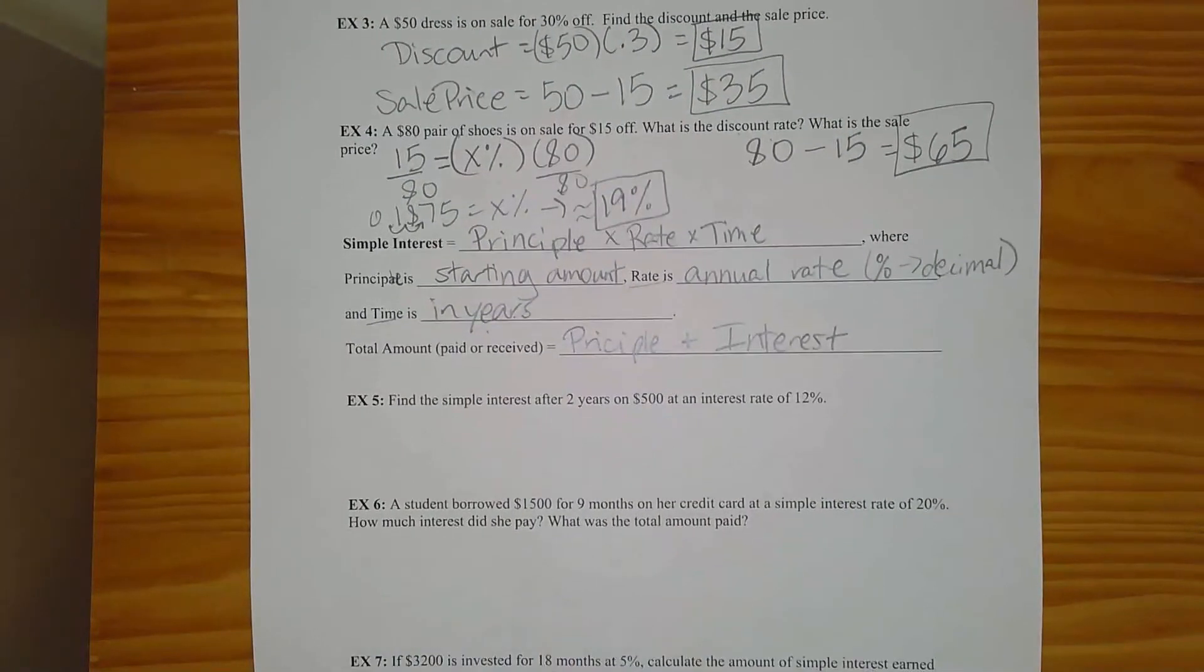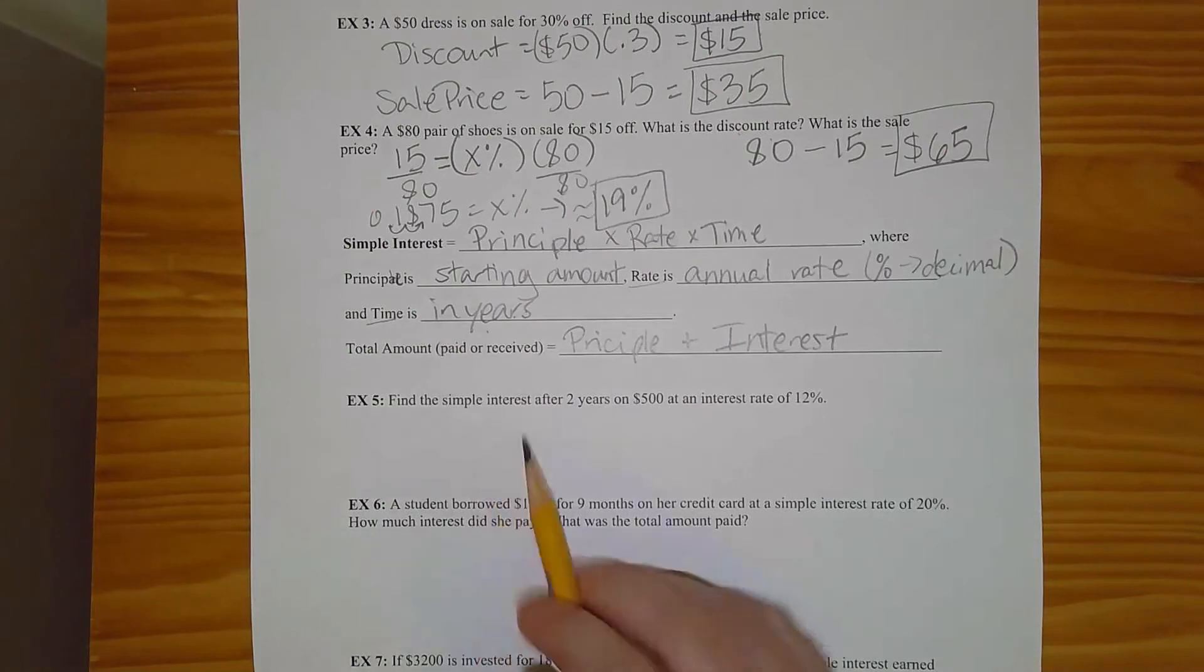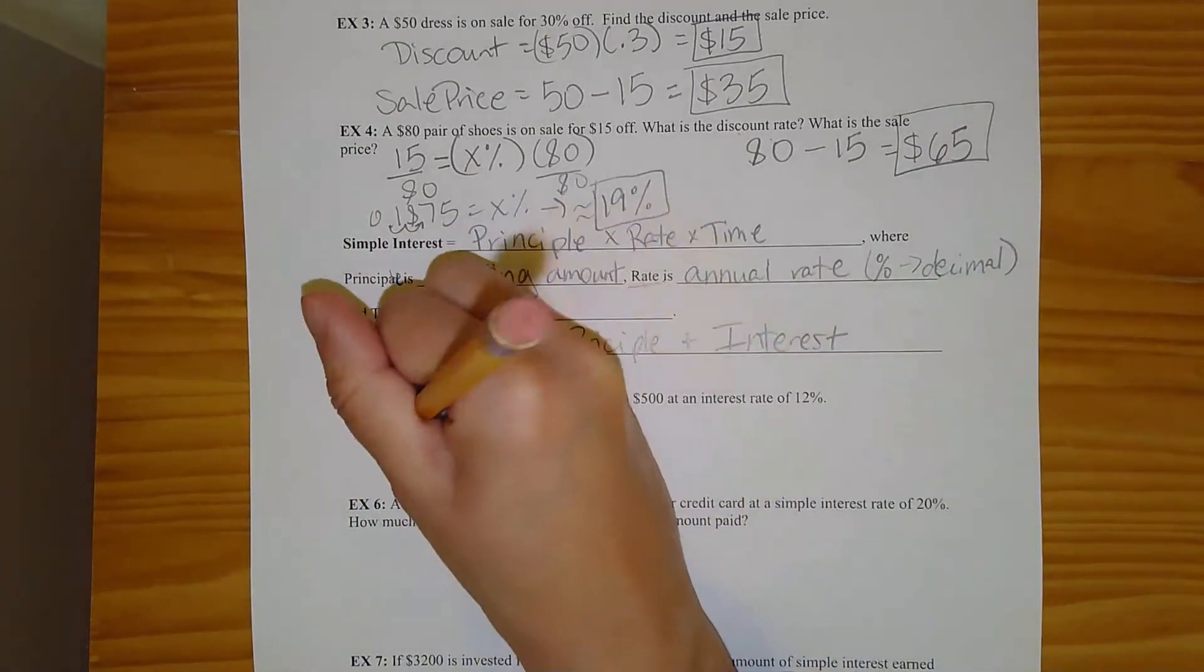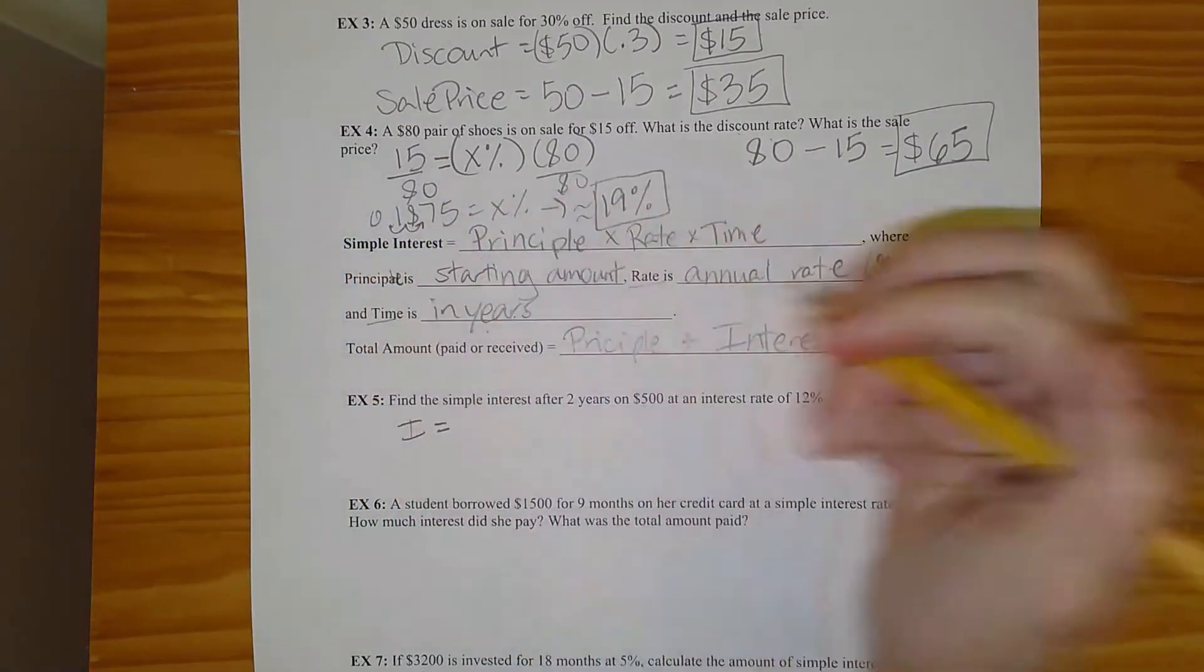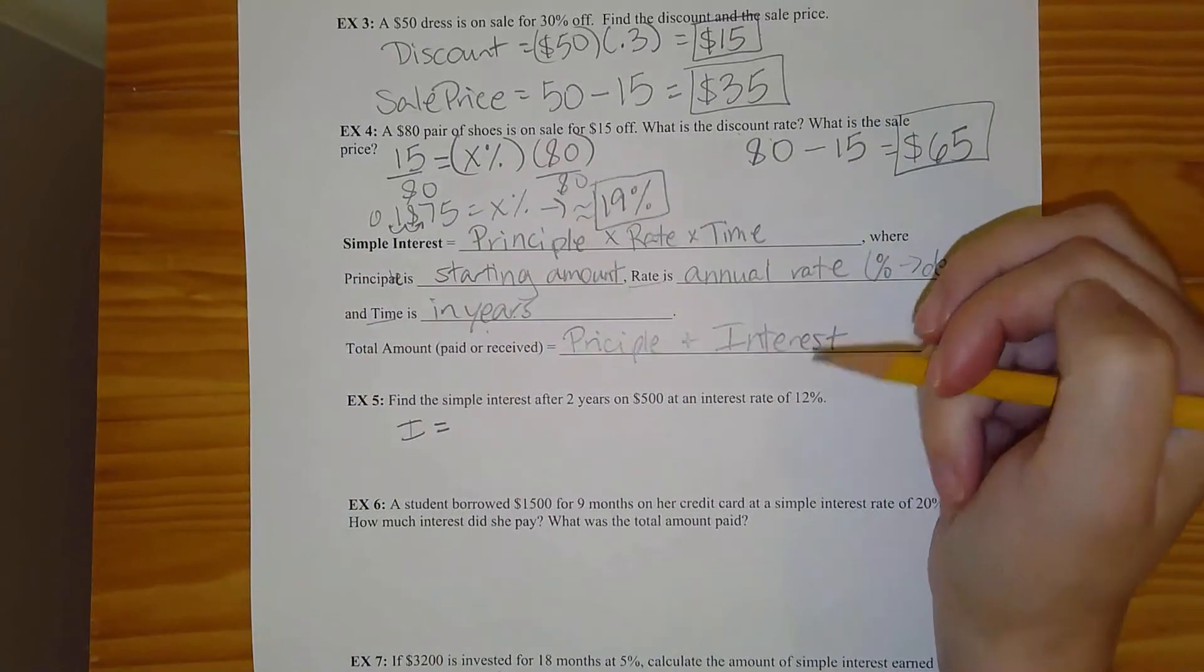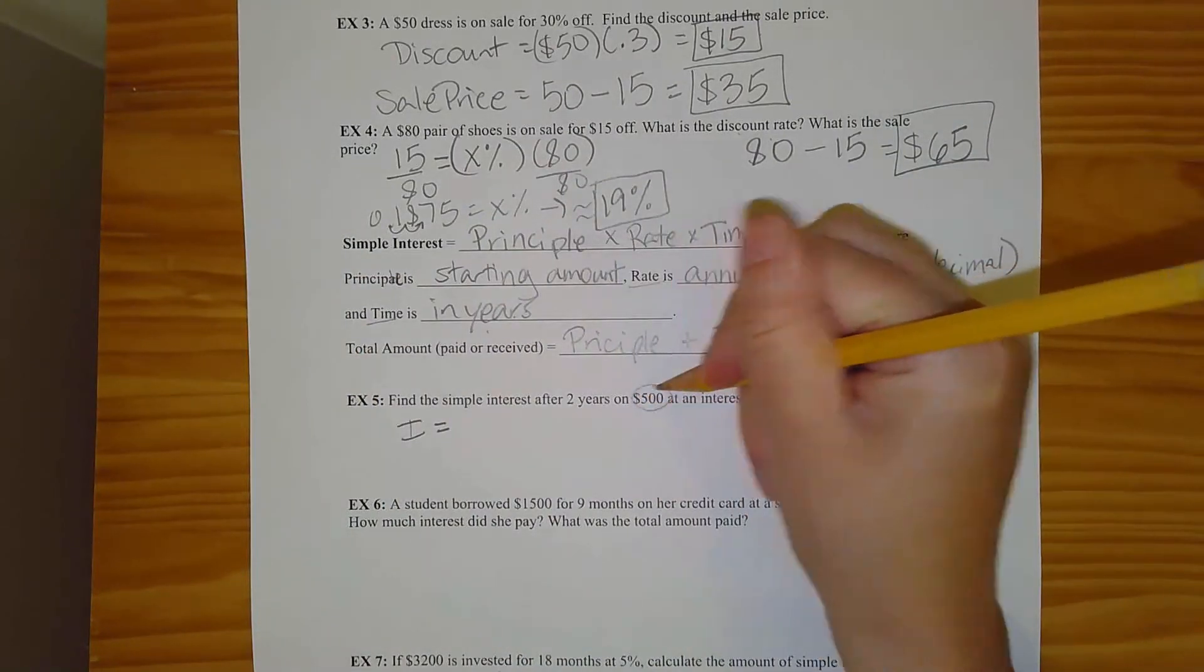So my first example says, find the simple interest after two years on $500 at an interest rate of 12%. So all I'm going to do is find the interest. So interest equals principal, so that's the starting dollar amount, which is my $500.